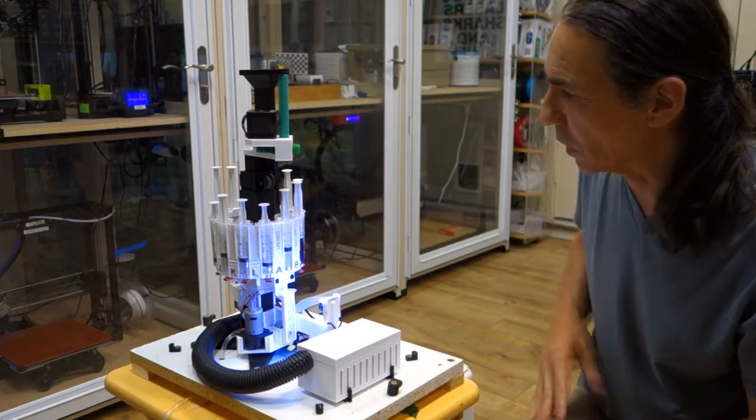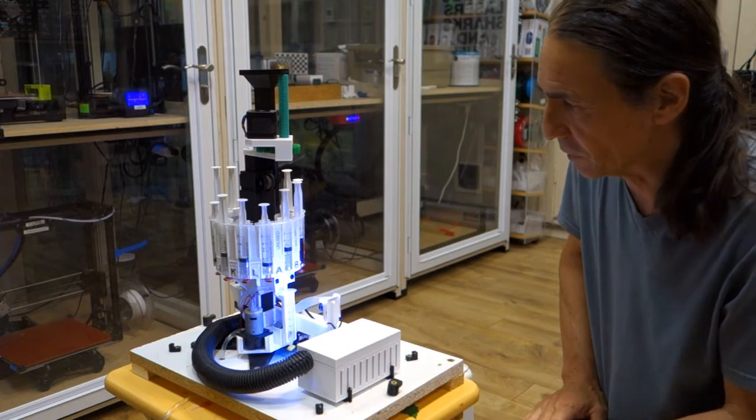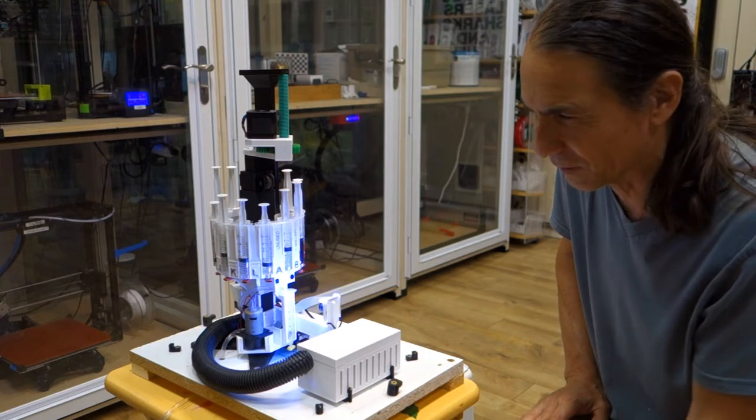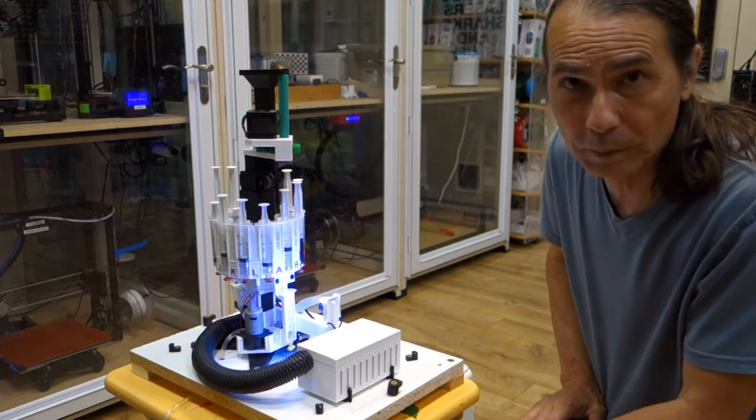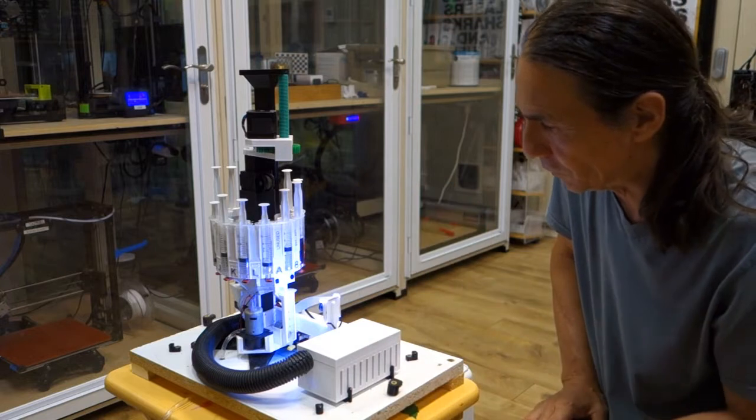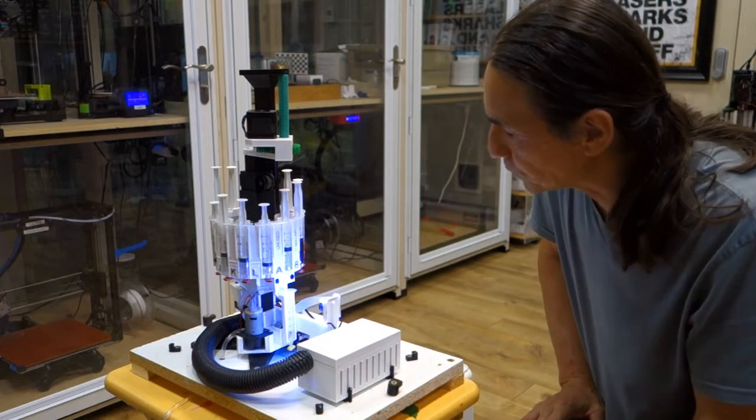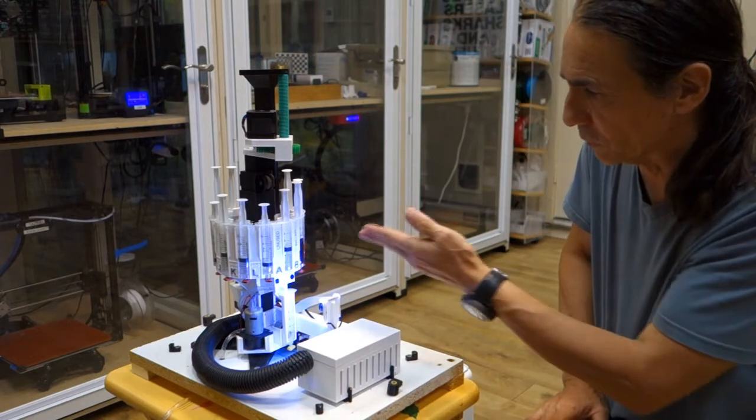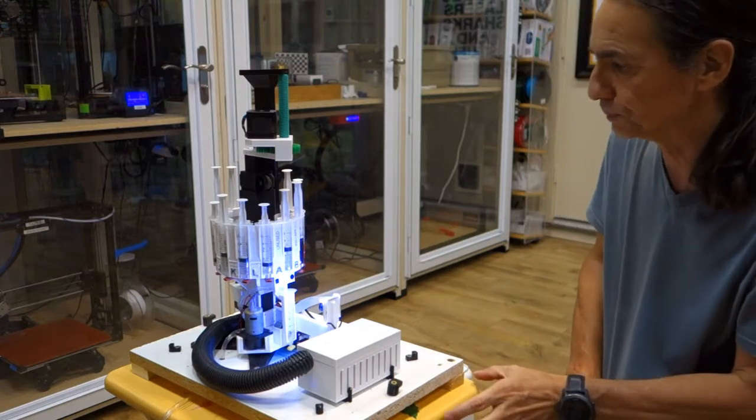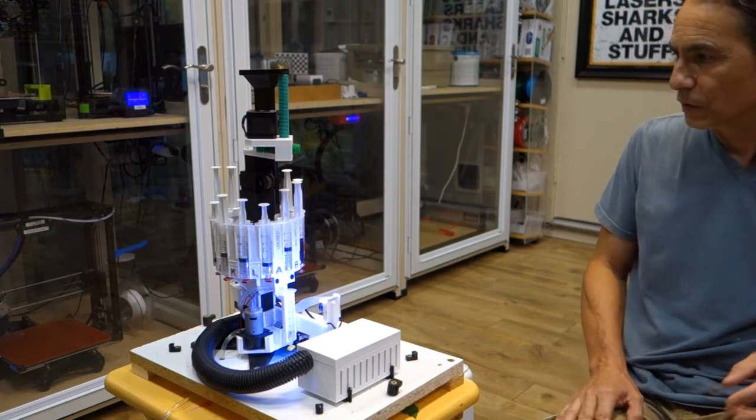The syringes are also available on Amazon. They're simple plastic, 10 milliliter syringes that you can buy. I think 100 of them for $18. No needles are included or anything. And they are what the reagent fits in and also the mixing tube.